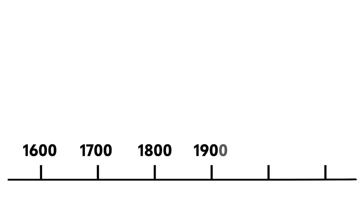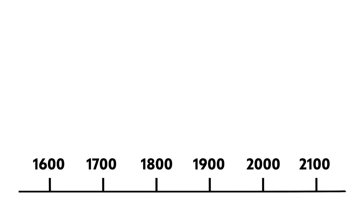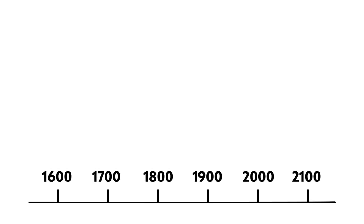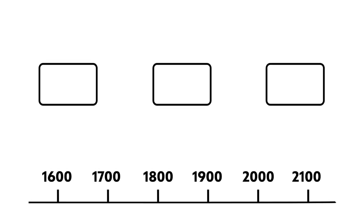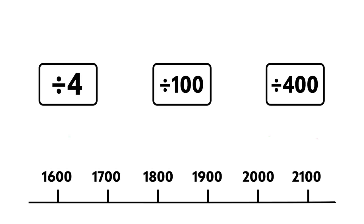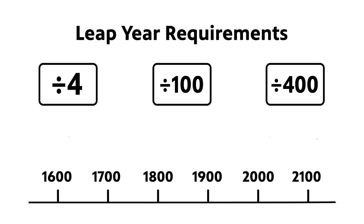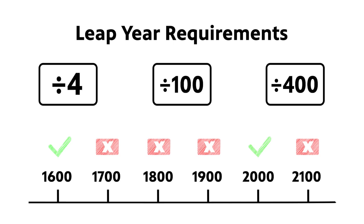Every hundred years on the century, we don't have that Leap Day, so we take it back out. But then every four centuries — every century divisible by 400 — we add that Leap Day back in.